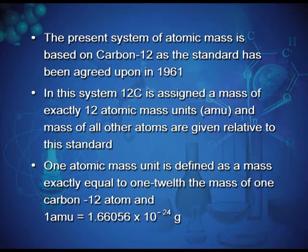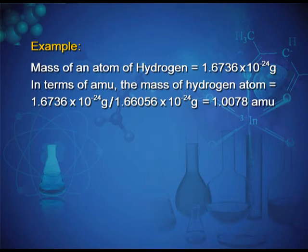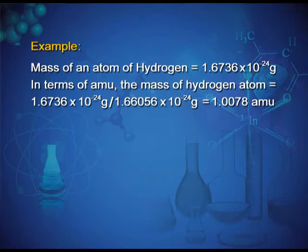One atomic mass unit is defined as exactly 1/12th the mass of one carbon-12 atom. Hence, 1 AMU = 1.66056 × 10⁻²⁴ grams. For example, the mass of a hydrogen atom is 1.6736 × 10⁻²⁴ grams. In terms of AMU, this equals 1.6736 × 10⁻²⁴ ÷ 1.66056 × 10⁻²⁴ = 1.0078 AMU.